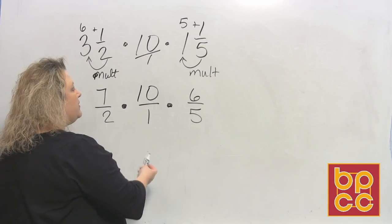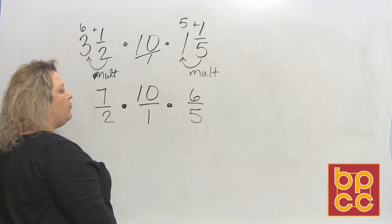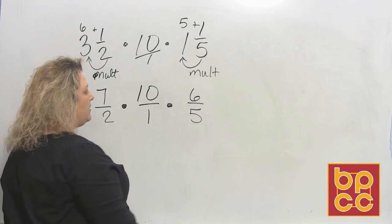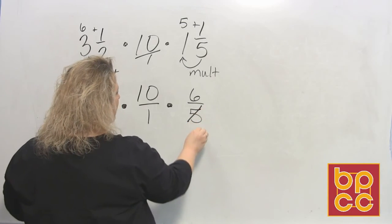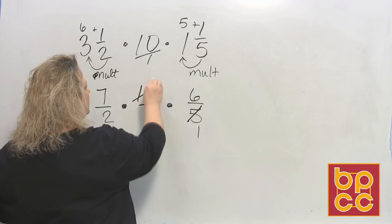So I'll go to the next one, 10. Does 10 have anything in common with 2, 1, or 5? It does. 10 and 5 have something in common. It's a 5. 5 divides into 5 once. 5 divides into 10 two times.